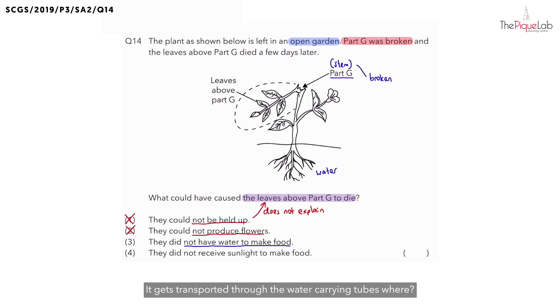And this water that is absorbed by the roots, it gets transported through the water-carrying tubes in the stem of the plant. So I'm going to draw this out in yellow. But remember what happened to the stem? They said the stem at part G was broken. And if the stem there is broken, do you think the water is able to reach the leaves above part G? Answer is no.